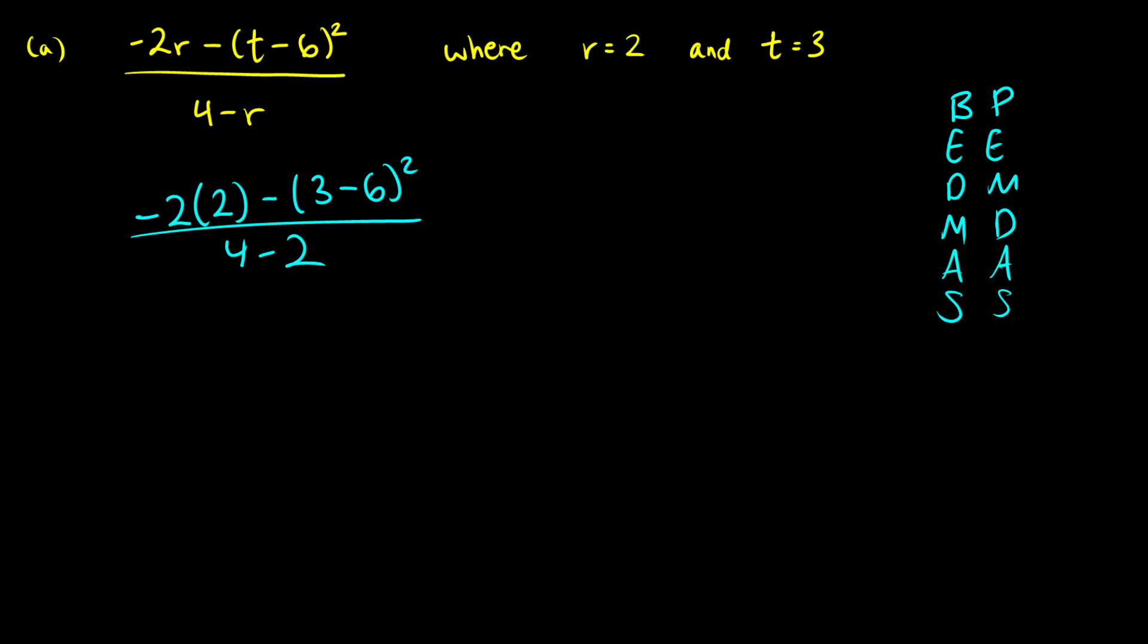Okay, the first thing we need to do are everything in parentheses. So we're going to focus on 3 minus 6 first. So let's do that. We're going to get negative 2 times 2, and we're going to subtract something squared. So 3 minus 6 is negative 3. That'll be squared, and then that's all over 4 minus 2.